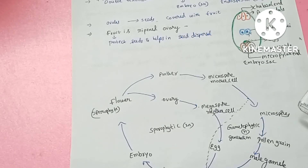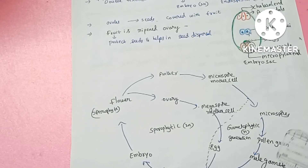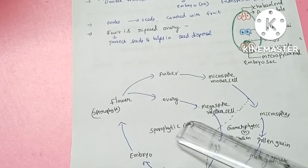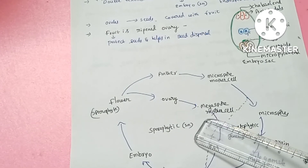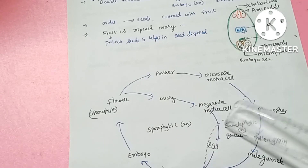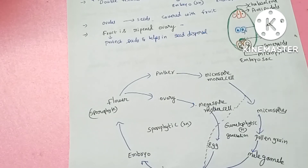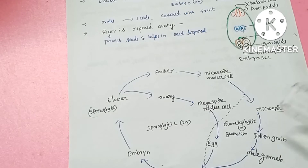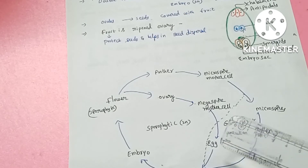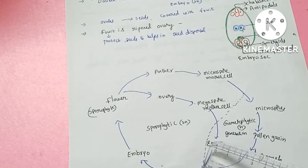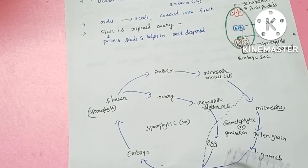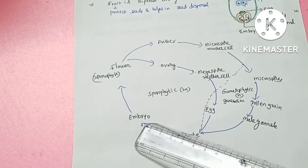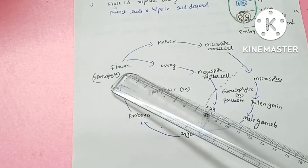In the life cycle: microspores in haploid condition develop into pollen grains and male gametes. Ovules in the flower contain megaspore mother cells, which form the embryo sac and female gametes. Male gametes fertilize the egg to form a zygote, which is in diploid condition and is then converted into the embryo and sporophyte.